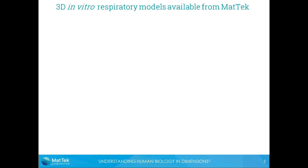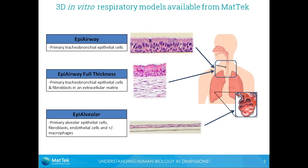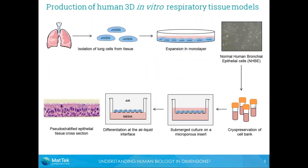At MatTek we produce three different varieties of 3D in vitro respiratory tissues. The first is EpiAirway and EpiAirway Full Thickness, which are models of the upper respiratory tract, and also EpiAlveolar, which is a model of the alveolar epithelial tissue.